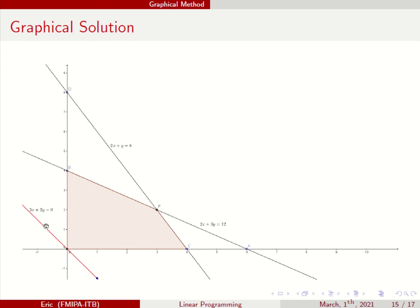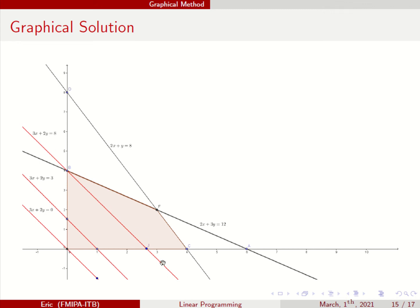So you can look at this objective function. Look at this objective function at point B — this will give you a profit of 8. So all of the points on this line segment will give you a solution where the profit is 8.